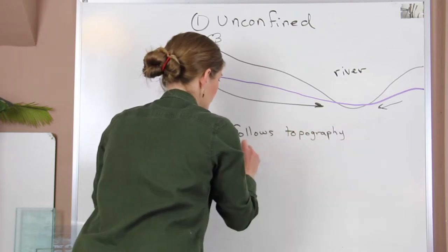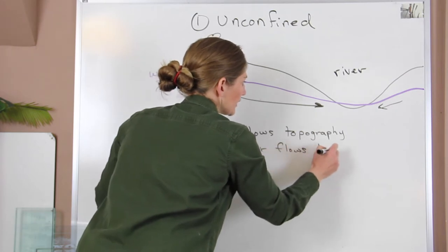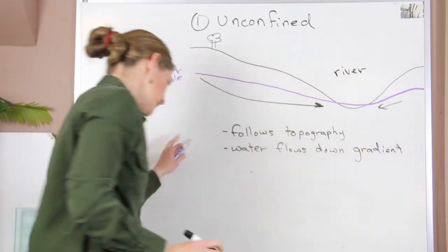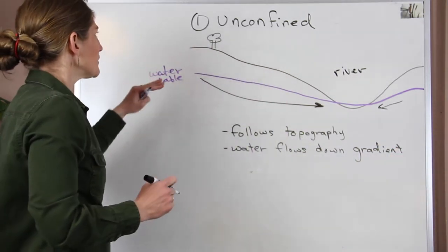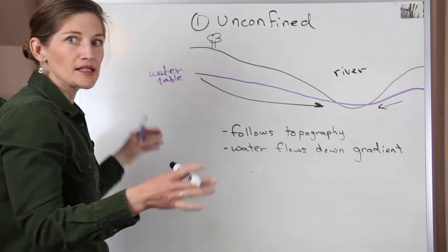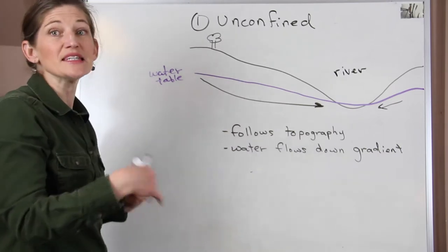And that water flows down the gradient. Then again, just like we had in the past image, the water table itself will rise and fall depending on the inputs and the outputs, so it will have some seasonal variations.